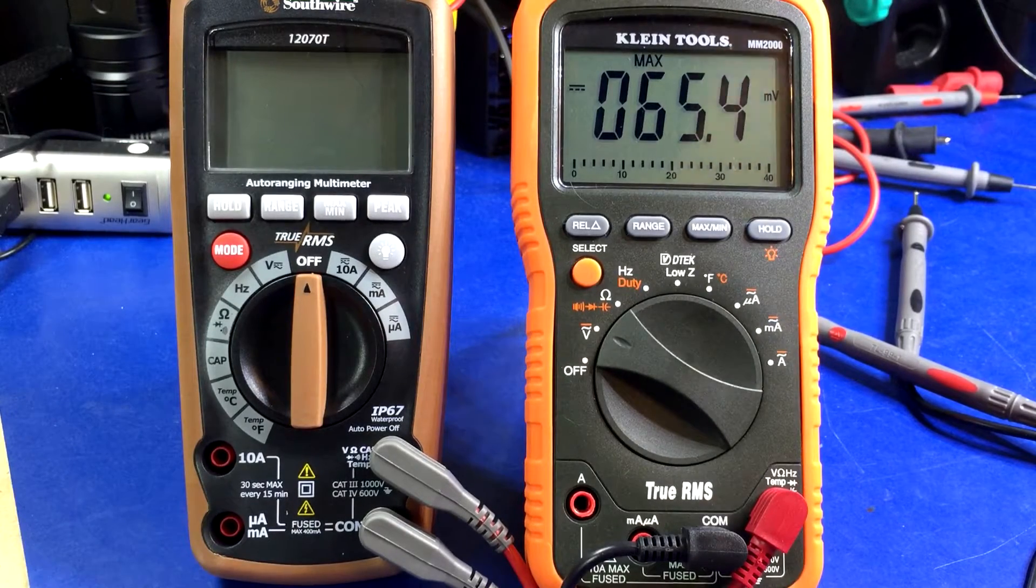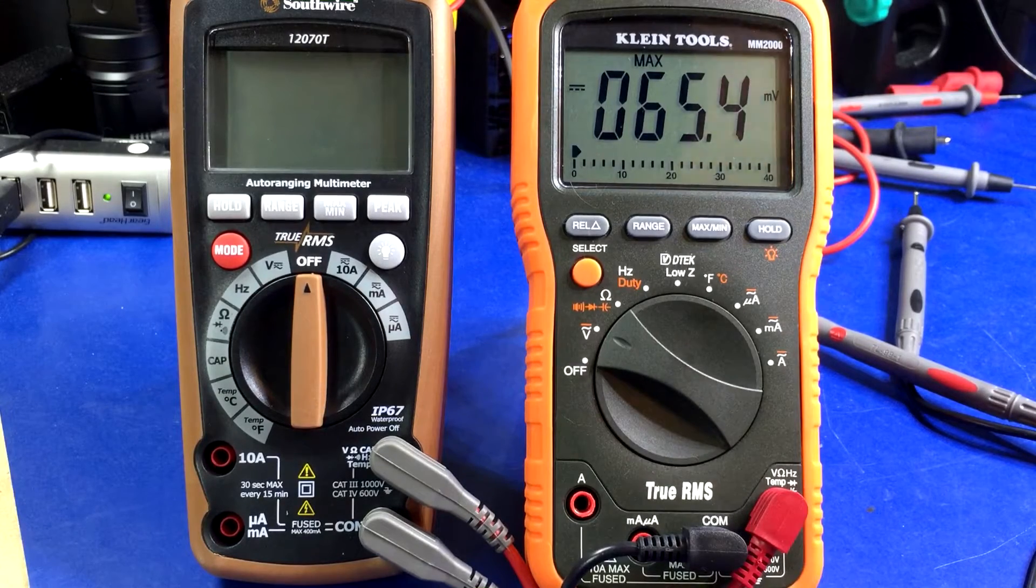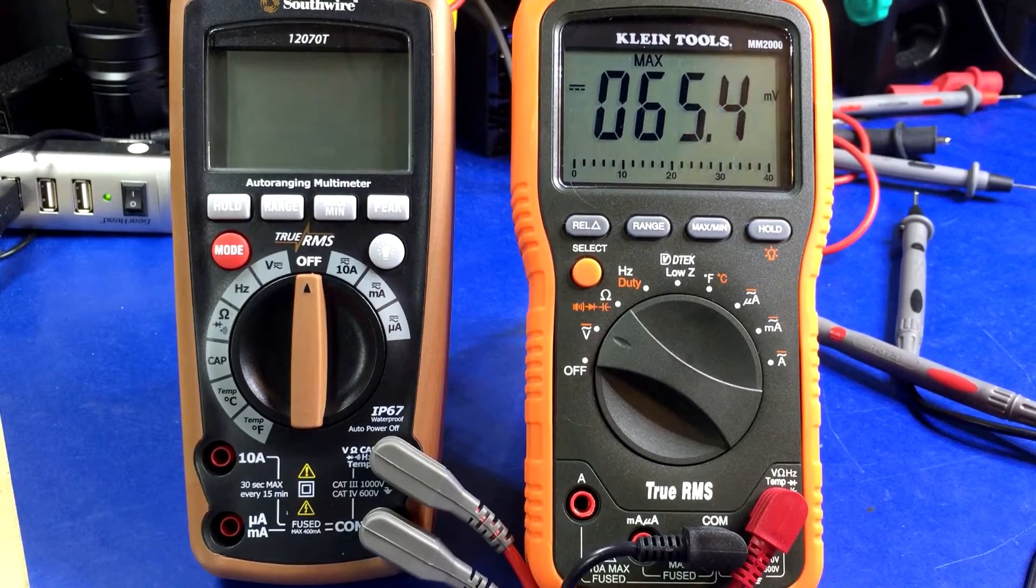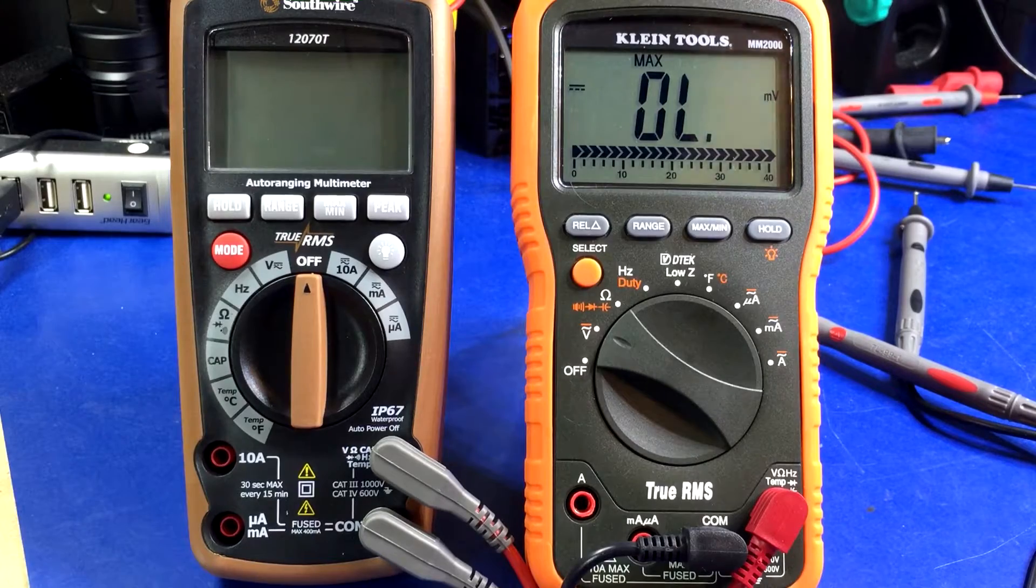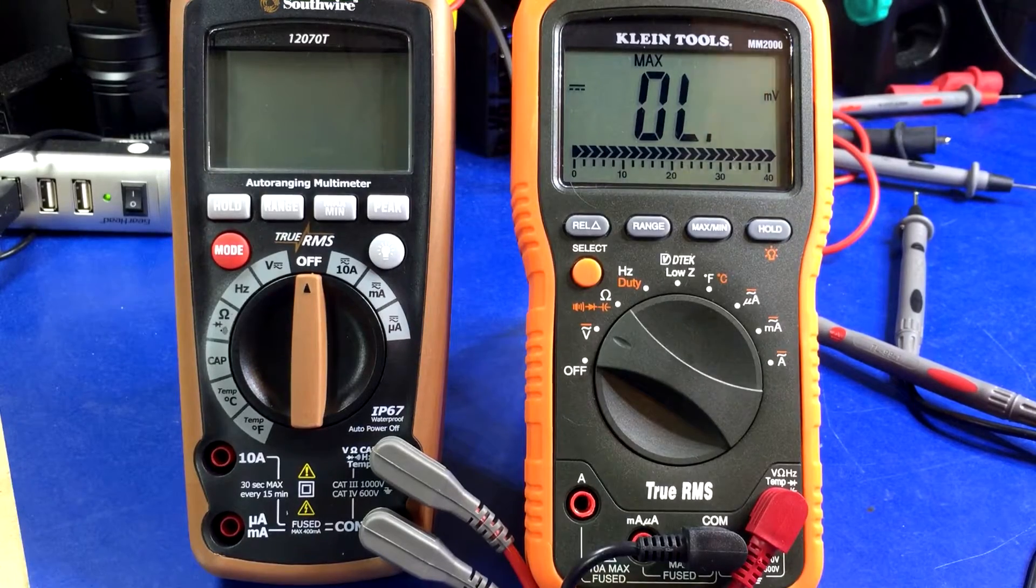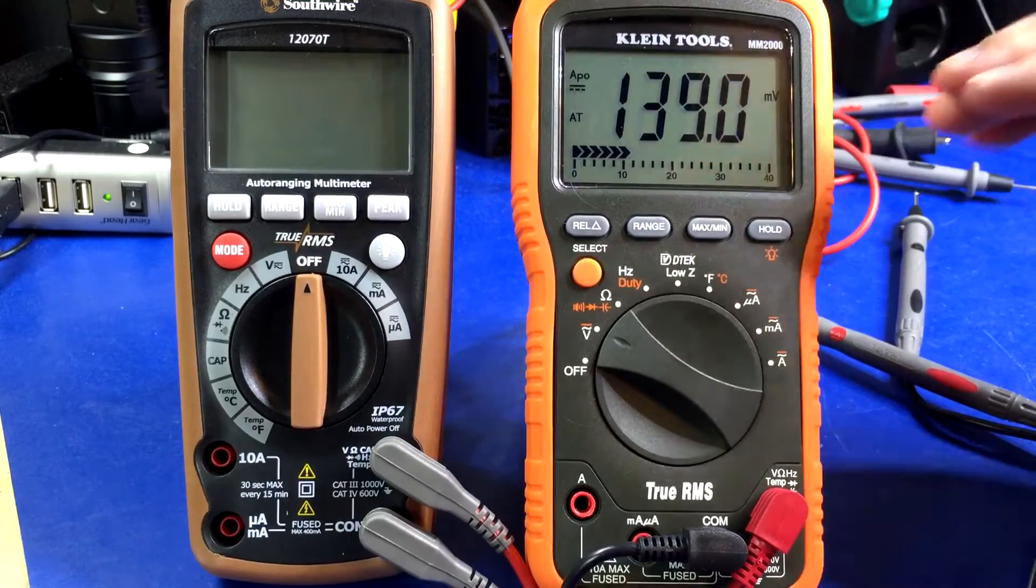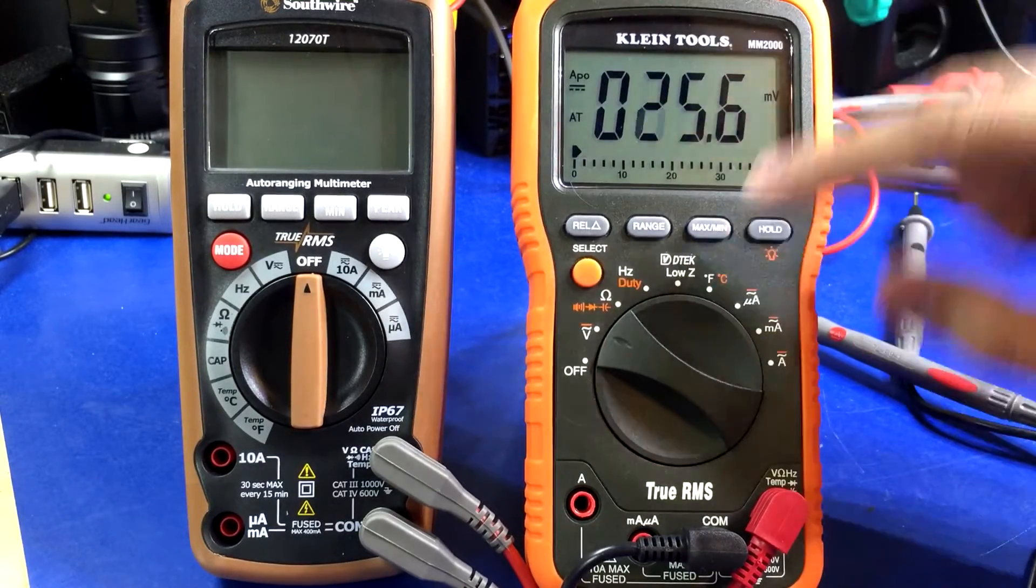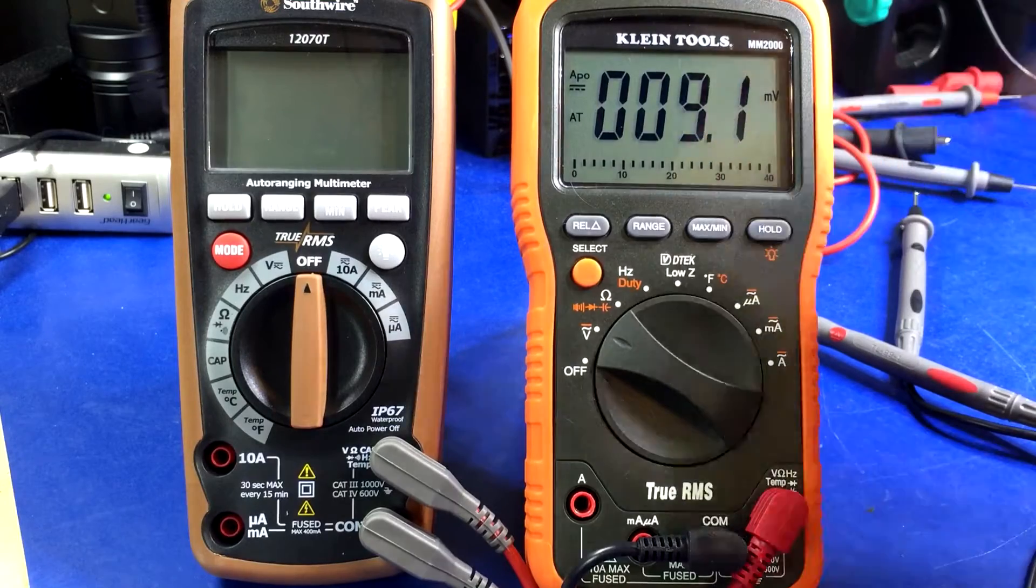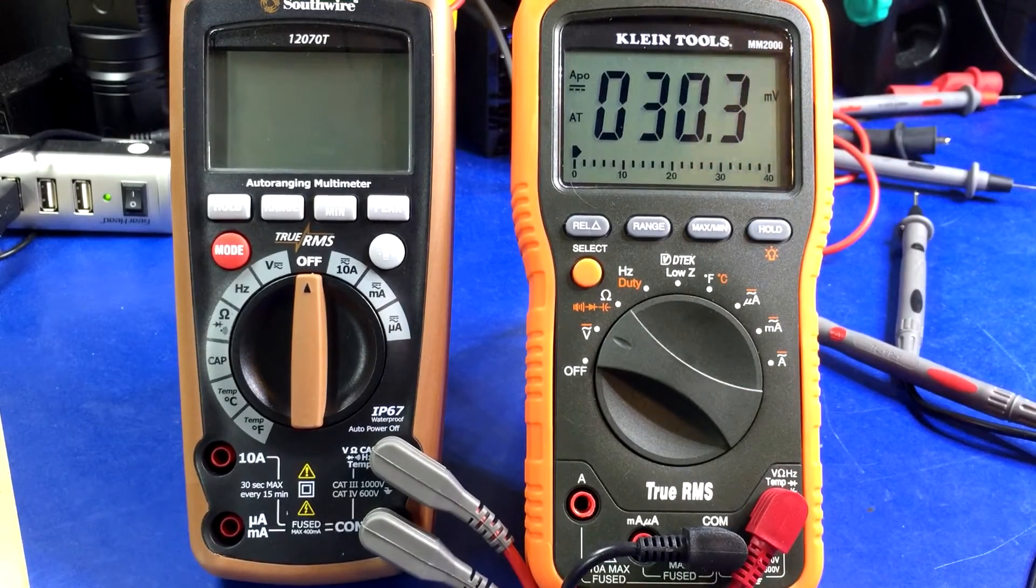Right now there's nothing on the probes, it's just noise that it read. So as soon as I touch this to my five volt reference, it's another thing I hate. That's another annoyance - with most of these when you use min max, it locks you into one specific range.